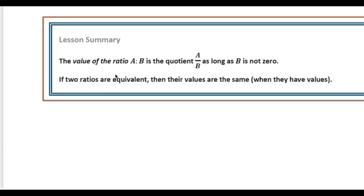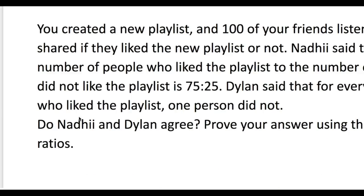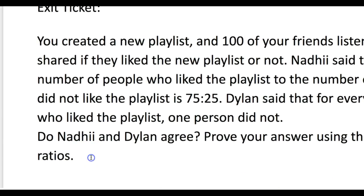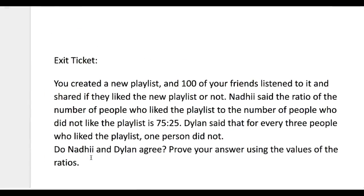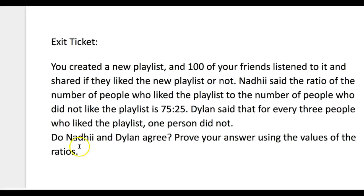Time for your exit ticket. You created a new playlist and 100 of your friends listened to it and shared if they liked it or not. Nadi said the ratio of the number of people who liked the playlist to those who did not is 75 to 25. Dylan said that for every three people who liked the playlist, one person did not. Do Nadi and Dylan agree? Prove your answer using the values of the ratios — the values mean the fraction — and think about what we did today, because that's how you prove this answer.